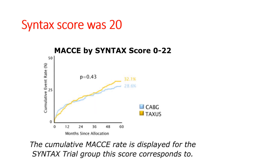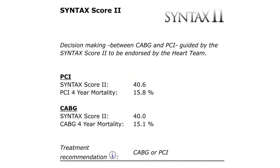When the SYNTAX score was calculated, it was around 20, excluding the ostial LAD. This placed the patient in the intermediate group with comparable results for both PCI and surgery. Even the SYNTAX 2 score, which takes into consideration renal function, showed comparable results. Our main concern was contrast-induced nephropathy, so we decided to do PCI with minimal contrast.